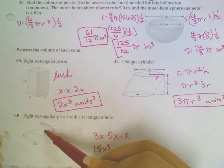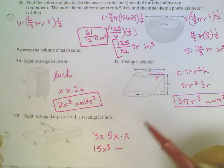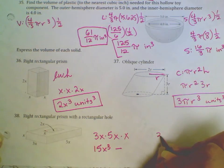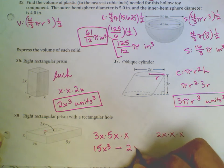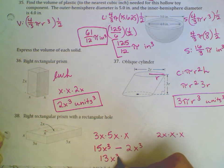If we know that this is x and this is 2x, it's going to have the same height as the other one. So we will do minus 2x times x times x, which is 2x cubed. So we will end up having 13x cubed units cubed.